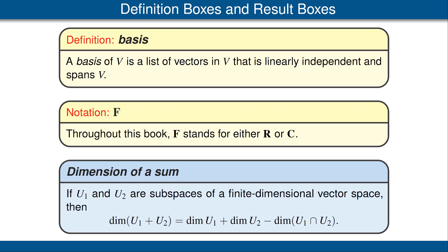In these videos, blue boxes will contain results, which in other books are called theorems, corollaries, lemmas, or propositions. However, instead of using those words, each result here will have a brief descriptive title, displayed in the first line, as in this example from Chapter 2, giving the formula for the dimension of a sum.